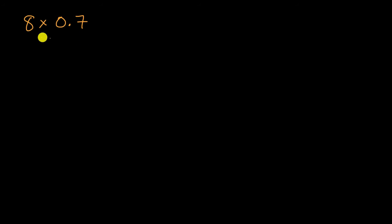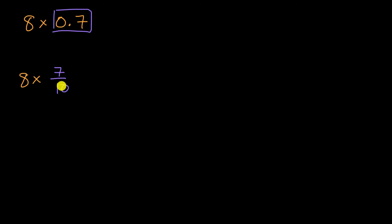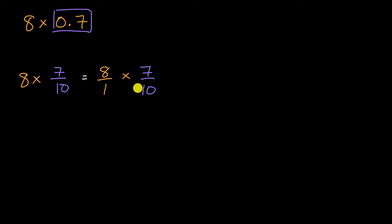There are several ways that we could approach what eight times seven-tenths is. We could view this as eight times seven-tenths, and we can re-express seven-tenths as a fraction. Seven over 10 is the same thing as 0.7, and we already know how to multiply fractions. We can view this as eight over one times seven over 10.